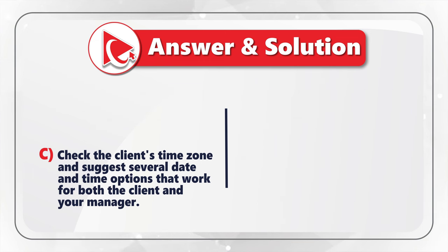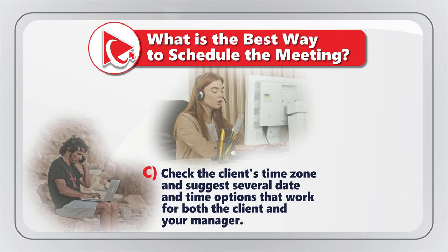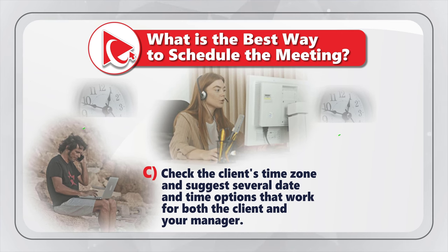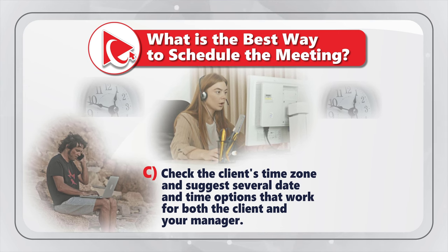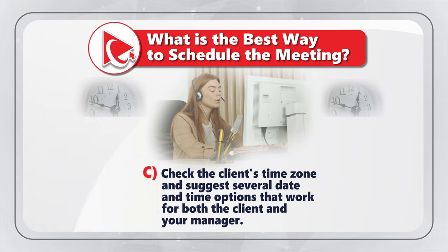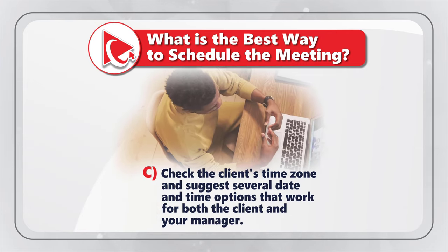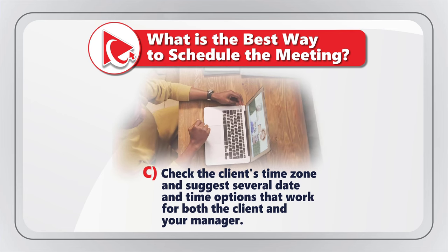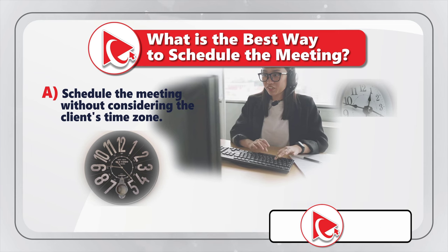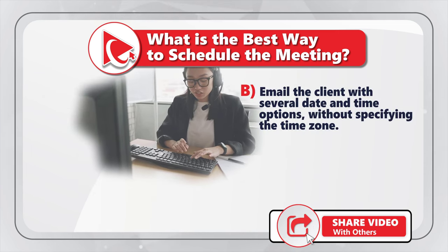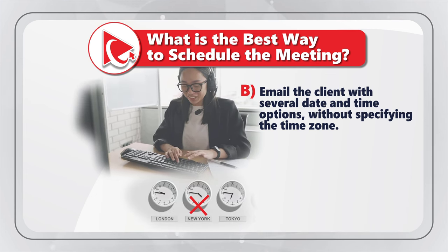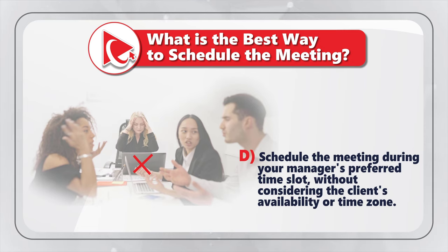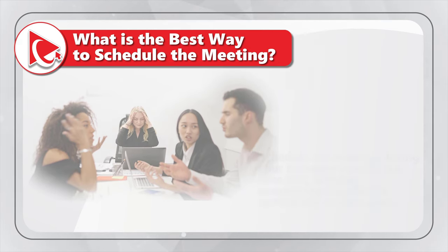I believe the correct answer is Choice C. Option C is the best choice because it takes into consideration the client's availability and time zone. There are two stakeholders — your manager and your client — and you need to suggest options that work for both. This minimizes the risk of confusion and miscommunication. Option A ignores the client's time zone, leading to scheduling conflicts. Option B doesn't specify the time zone, causing confusion. Option D disregards the client's availability, damaging the company's reputation.